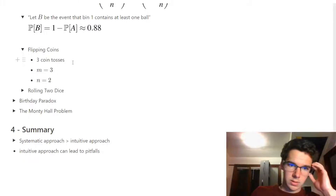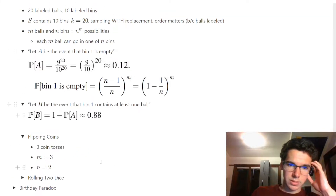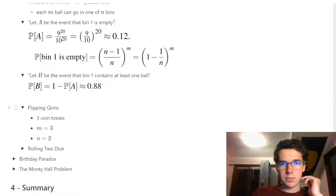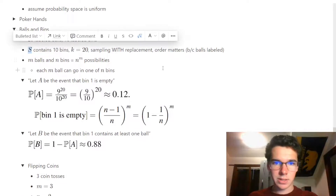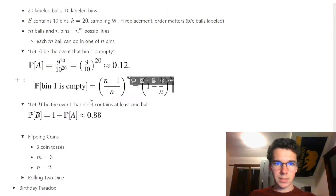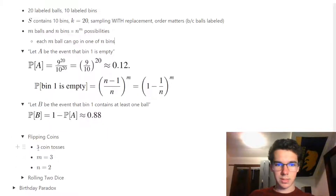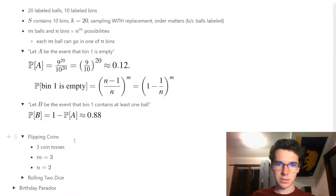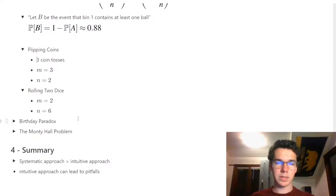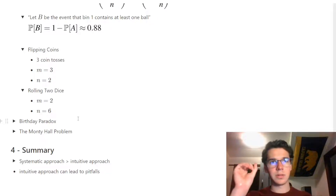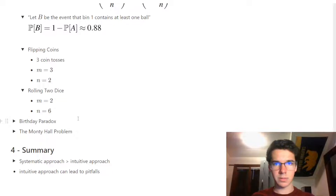Still in the context of balls and bins — the framework is versatile. We can represent coin tosses using two bins (heads or tails); three tosses means placing three balls into one of the two bins. Similarly, rolling dice uses six bins, and rolling twice means placing two balls into one of those six bins.